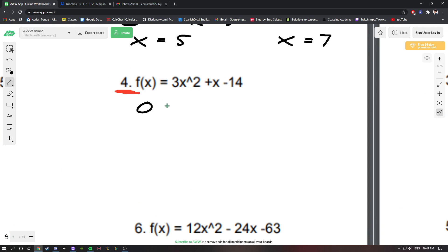Same thing here. We want to set f(x) equal to 0: 3x² + x - 14. When we have a leading coefficient that's greater than 1, or that's not 1, we want to multiply it by this constant value here. 3 times -14 equals -42. What we're trying to find is two numbers that will multiply to equal -42, and when we add them up, they'll equal 1.